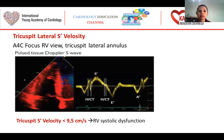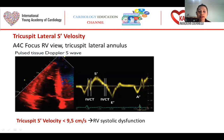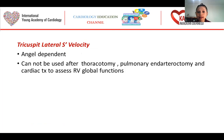We can measure S-velocity from the RV-focused 4-chamber view at the lateral tricuspid annulus using tissue Doppler. We put the Doppler cursor at the lateral annulus and obtain the S-velocity. If S-velocity is lower than 9.5 cm per second, we can say there is RV systolic dysfunction. It is also angle-dependent and cannot be used after tricuspid surgery, pulmonary endarterectomy, or cardiac transplantation to assess RV global functions.